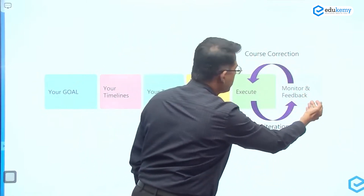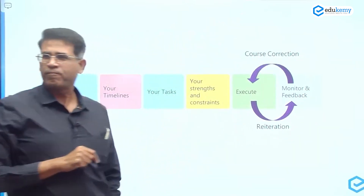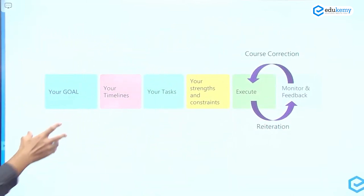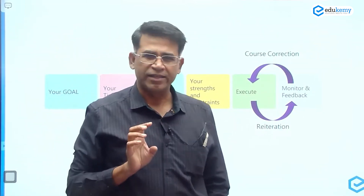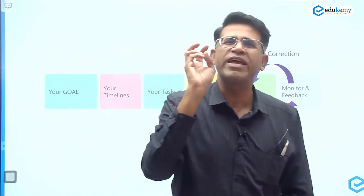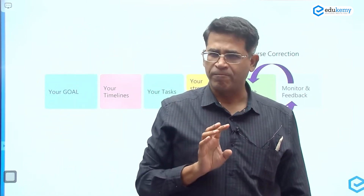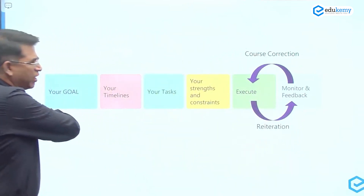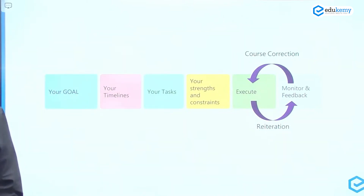Then you execute, you take feedback, you correct yourself, you take feedback again — and this goes on as a cycle. It is not simply that you join a course and finish the course. That is a very naive way of planning. Any project management is done on these lines.